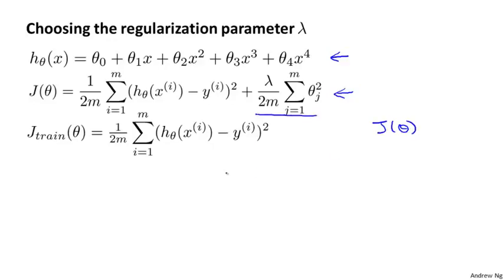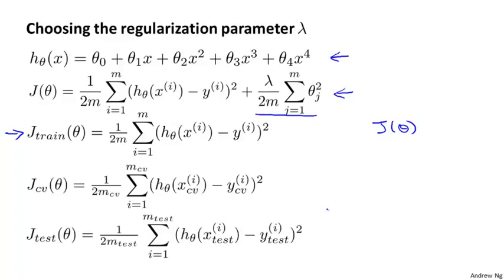But when we're using regularization — when there is this extra lambda term — we're going to define J_train, my training set error, to be just my sum of squared errors on the training set, without taking into account that regularization term. Similarly, I'm also going to define the cross validation set error and the test set error as before, to be the average sum of squared errors on the cross validation and the test sets.